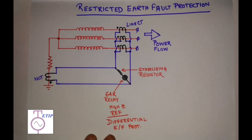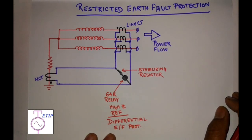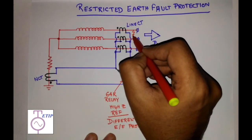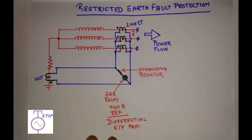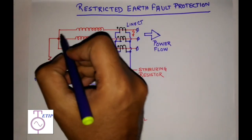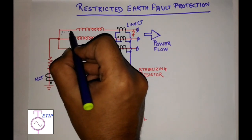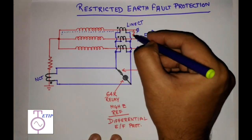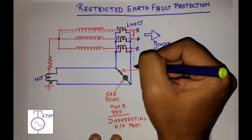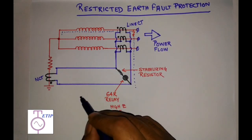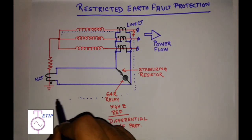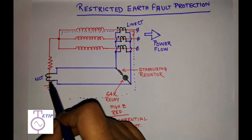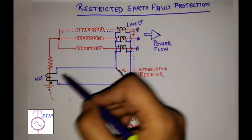Suppose a fault has occurred at the terminal outside the protective zone — an earth fault. The earth fault current will start from that point, flow through the line, come back to earth, and return to the source by the neutral. In this case both the line CT and the neutral CT will see the earth fault.